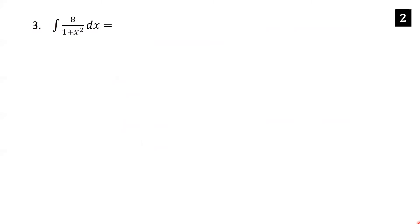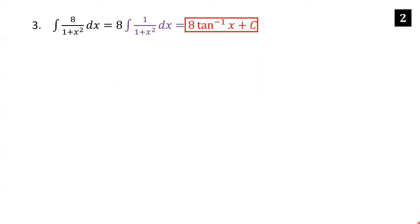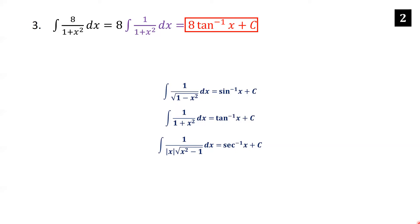The integral of 8 over 1 plus x squared dx. Since 8 is a constant, we can pull it out front. The integral of 1 over 1 plus x squared dx is just the inverse tangent of x. So we get 8 inverse tangent of x plus c — don't forget the arbitrary constant. Inverse tangent of x can also be written as arctan x. Here are inverse trig integrals you should know: the integral of 1 over the square root of 1 minus x squared dx is inverse sine of x plus c; the integral of 1 over 1 plus x squared dx equals inverse tan of x plus c; and the integral of 1 over the absolute value of x times the square root of x squared minus 1 dx is inverse secant of x plus c.